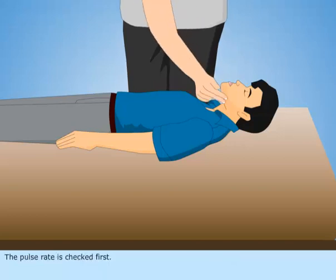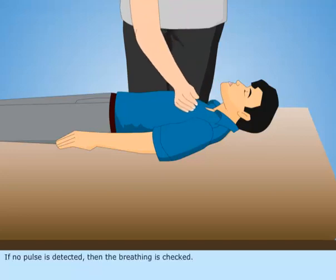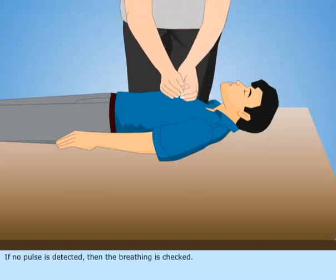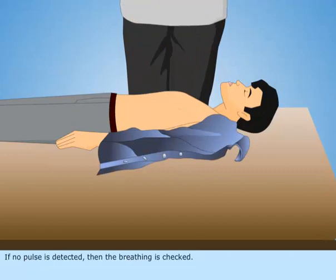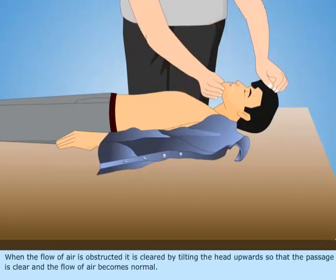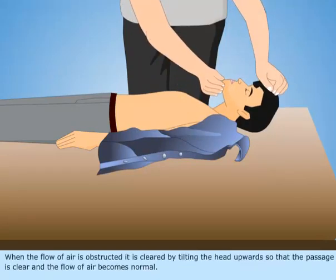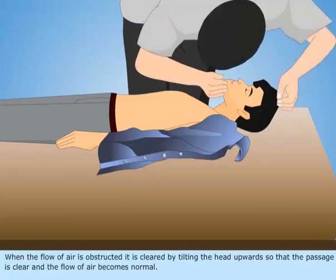The pulse rate is checked first. If no pulse is detected, then the breathing is checked. When the flow of air is obstructed, it is cleared by tilting the head upwards so that the passage is clear and the flow of air becomes normal.